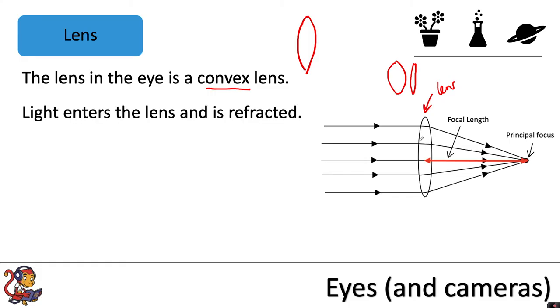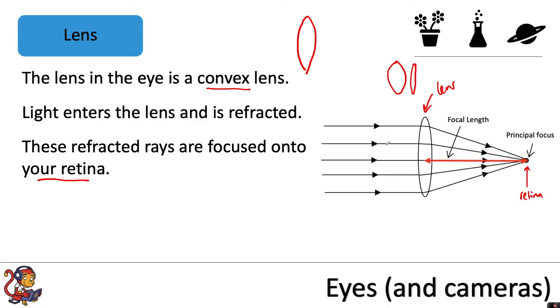The light enters the lens and is refracted so it's bent slightly as it enters the lens and the extent to which it's bent will all depend on that shape of the lens. These refracted rays are then focused onto your retina. So this point here would be your retina in your eye. You've had the light going in, refracted by the lens and then focused onto your retina.